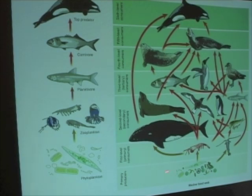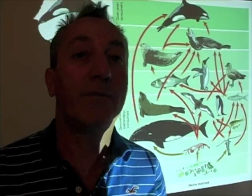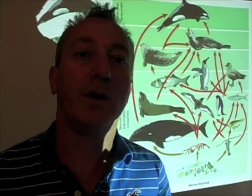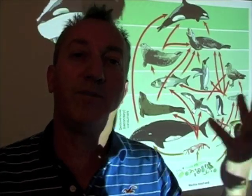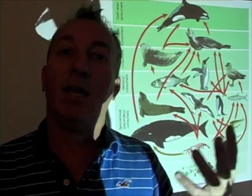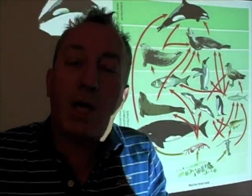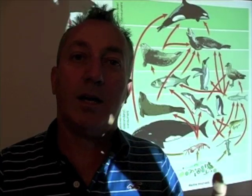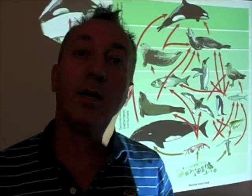One thing we should note is the way that we talk about different levels of a food chain or food web. We've spent considerable time talking about the primary producers — the phytoplankton that absorb carbon dioxide from the environment, take sunlight, and mix those two together to create chemical energy. That chemical energy is then fed upon by herbivores, organisms that eat the phytoplankton. Because phytoplankton are the organisms, like plants, who are producing food in the first place, they're called primary producers.